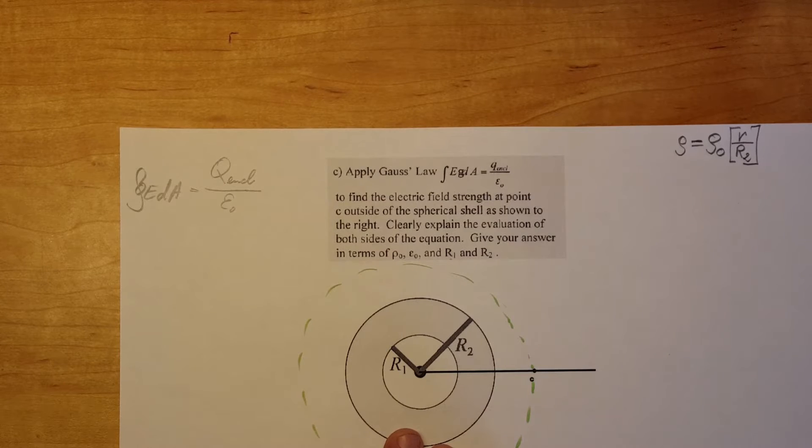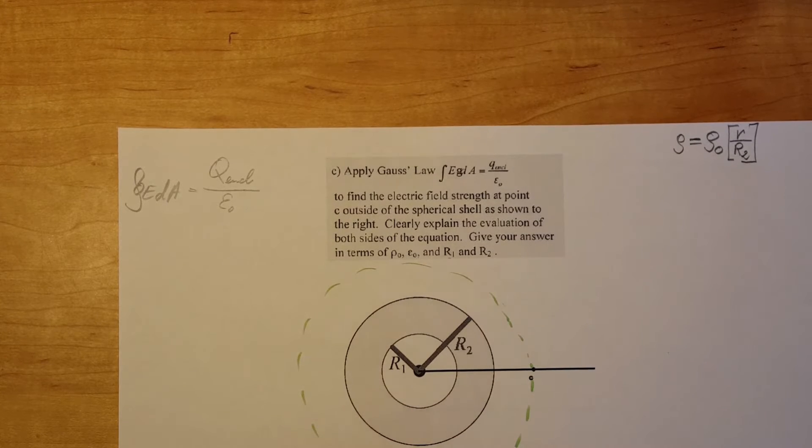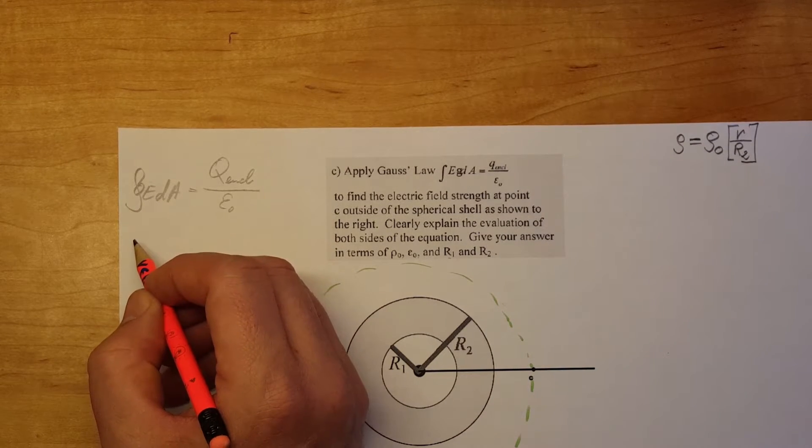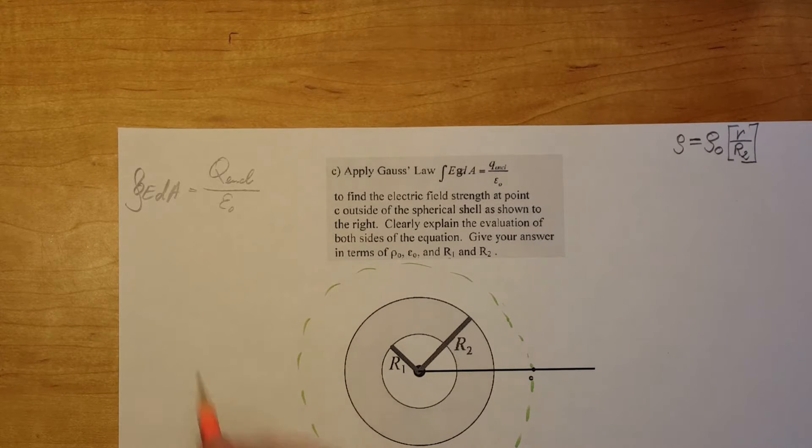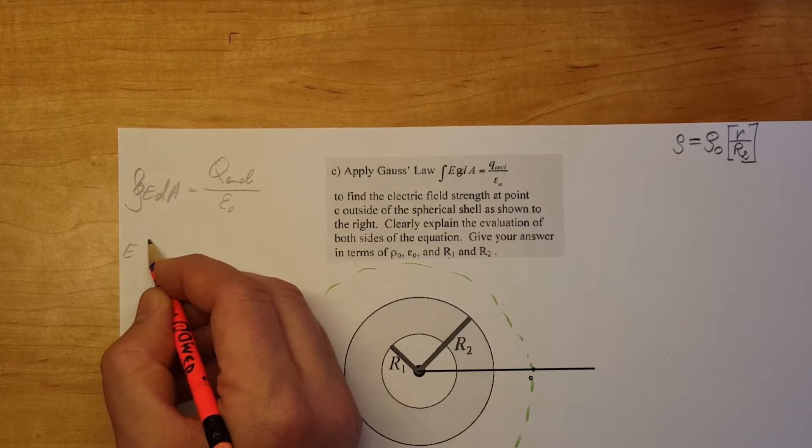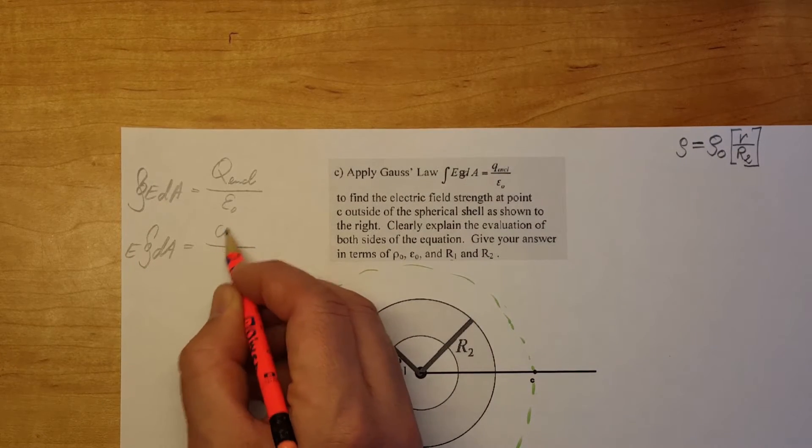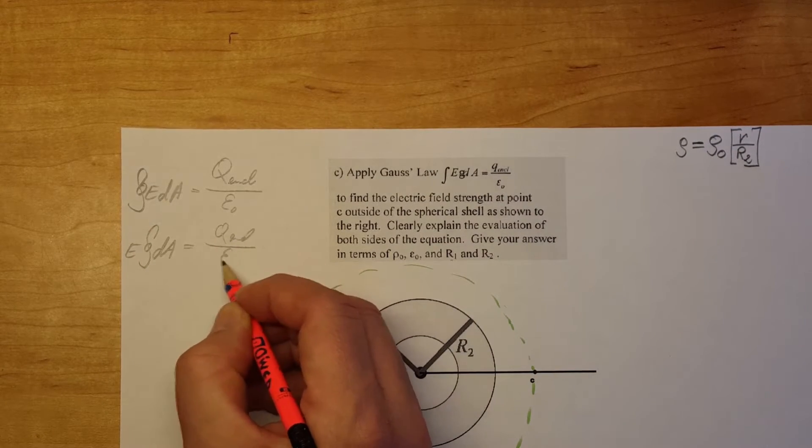Again, our shape is a nice sphere so we know how to find the area for that. E we're going to move in front of the integral since it's constant. E integral dA equals Q enclosed over E naught.